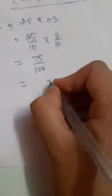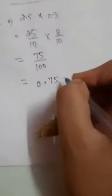Now, question number 5 is find 2.5 multiplied by 0.3. 2.5 equals 25 divided by 10 into 3 divided by 10. 25 times 3 are 75, 10 times 10 are 100, which equals 75 over 100, that is 0.75.